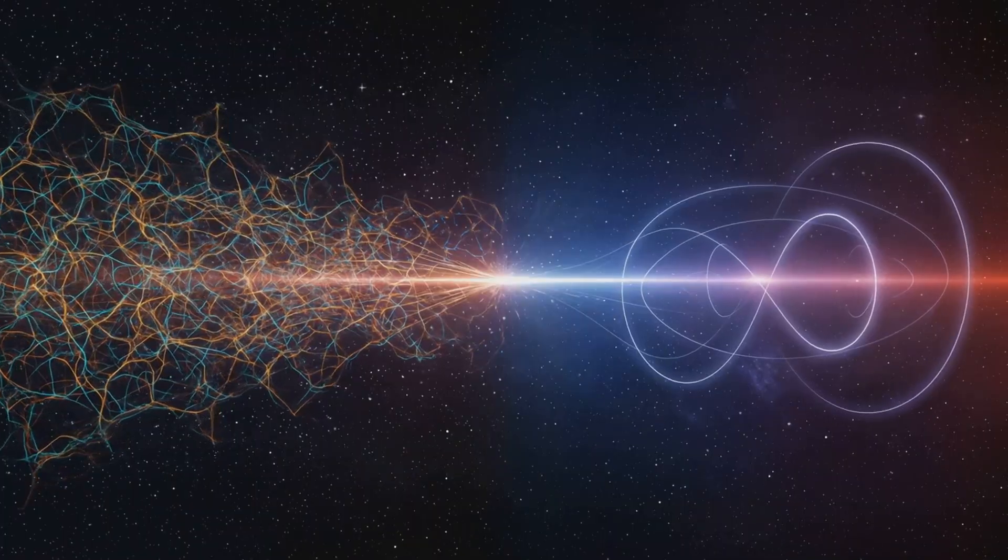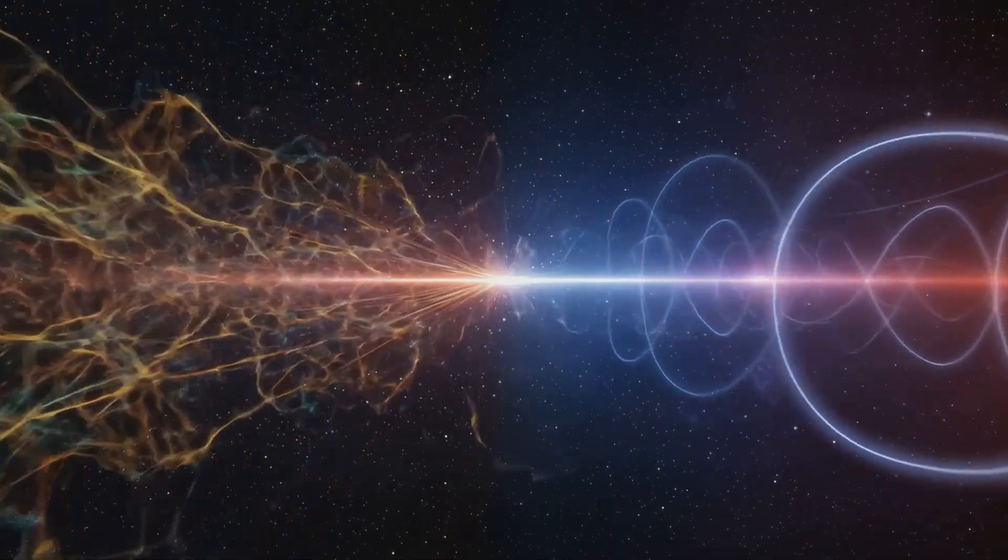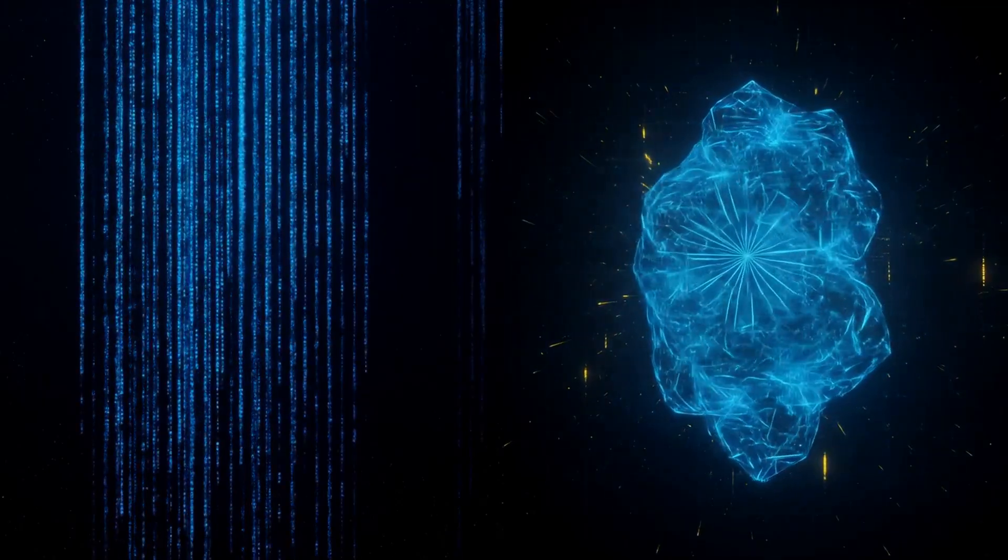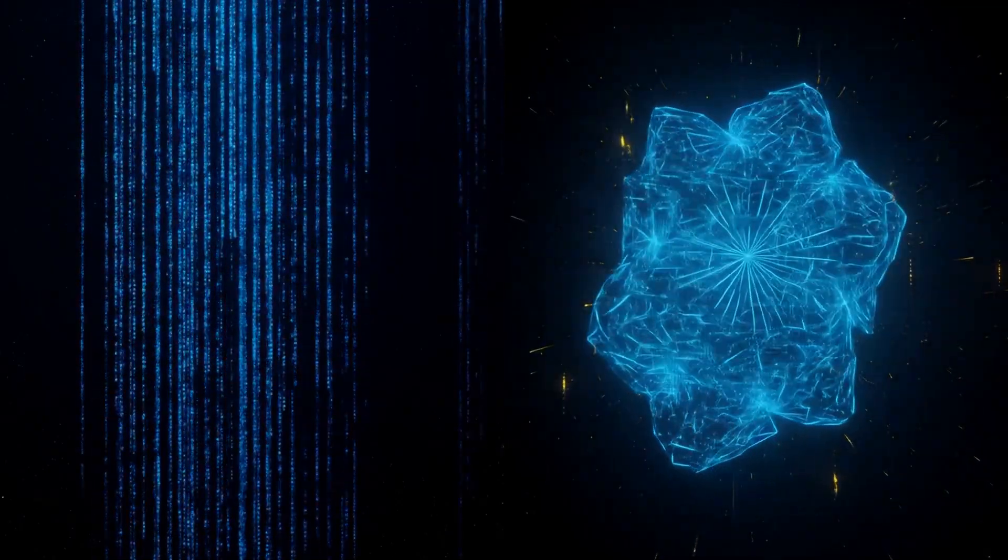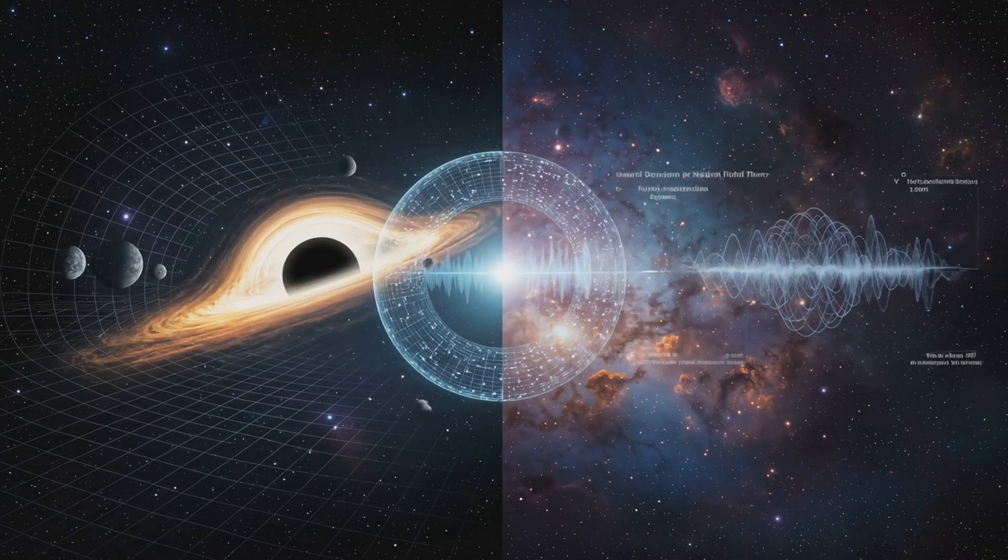When we correct Einstein's equations with quantum interference terms, we recover both general relativity and quantum field theory, not separately, but as parts of one unified holographic system.